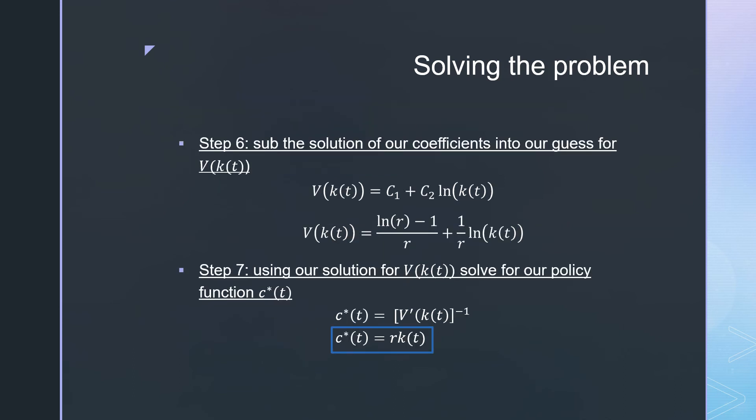Next, we sub the solution of our coefficients into our guess for V(kt). We have our value function here and we've got our values for our coefficients c1 and c2, and we plug them in. We now have a definition of our value function.